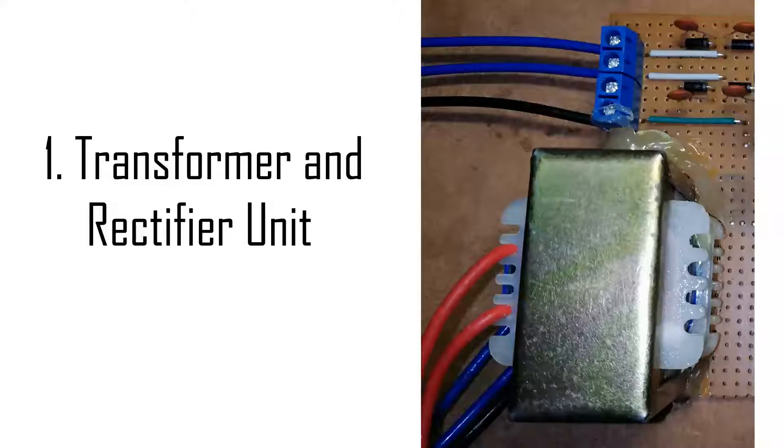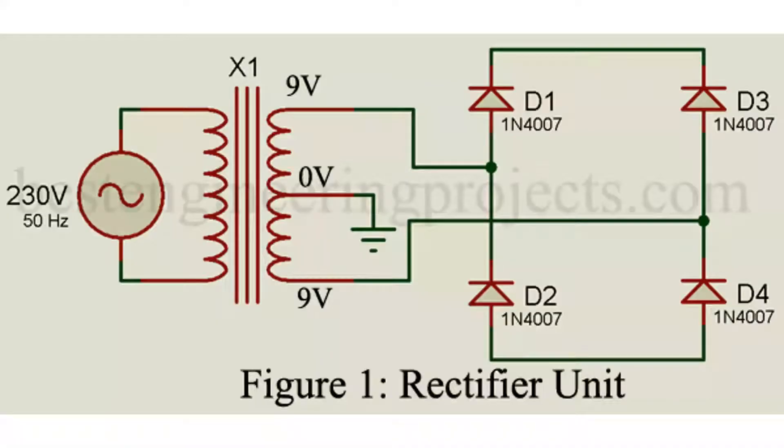Transformer and rectifier unit. Here we are using center-tap transformer. Thus in the secondary side we have three terminals: two for 9 volts and center is for 0 volts.